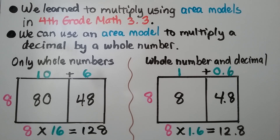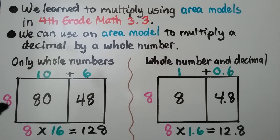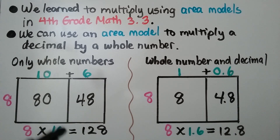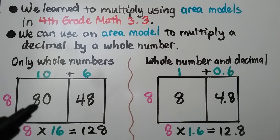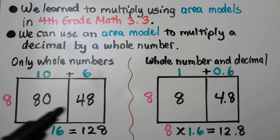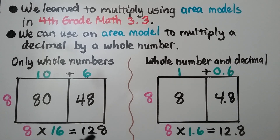We can use an area model to multiply a decimal by a whole number. If we were only multiplying whole numbers, we have 8 times 16. We can put the factor 8 here, and we can break the 16 into a 10 plus 6. We do 8 times 10, which is 80, and 8 times 6, which is 48. We add the partial products and we get 128.